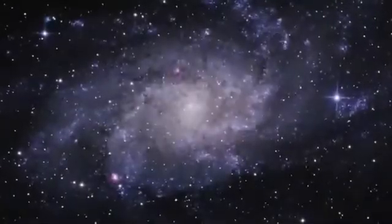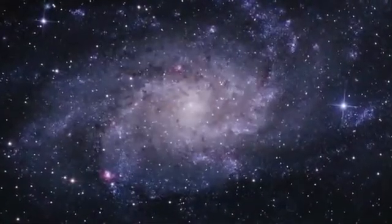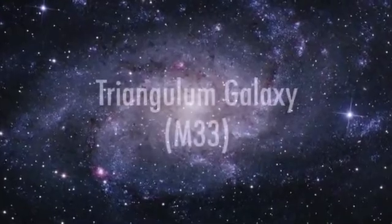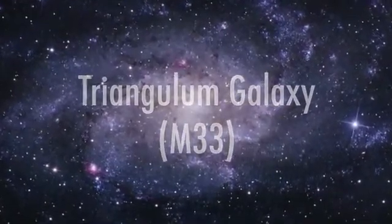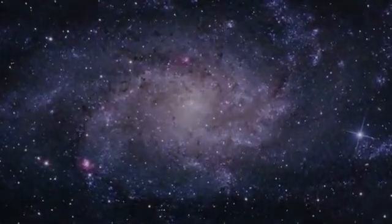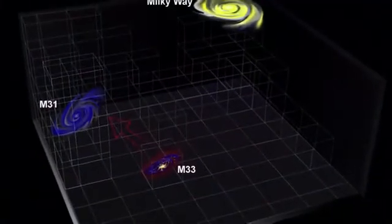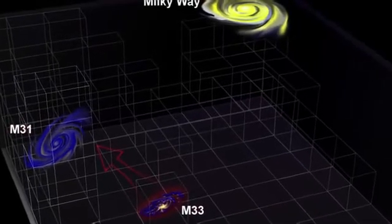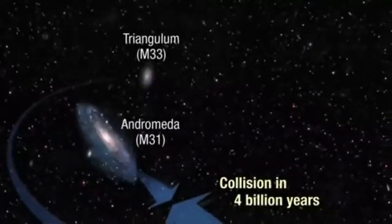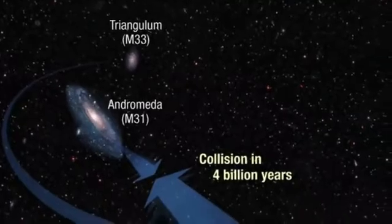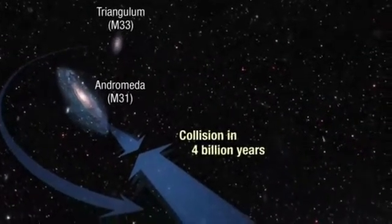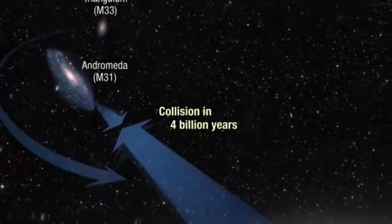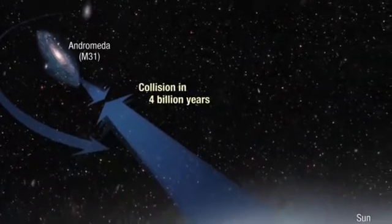To make matters more complicated, Andromeda has a companion, the Triangulum Galaxy, also known as M33. M33 is a relatively small galaxy, not nearly as large as Andromeda or the Milky Way. Nevertheless, it could play a big role. M33 will join in the collision and perhaps later merge with the Andromeda-Milky Way pair. There is even a small chance that M33 might hit the Milky Way first.